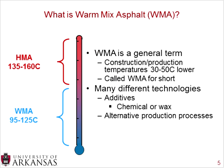What is warm mixed asphalt? It's a general term used when talking about construction or production temperatures approximately 30 to 50 degrees Celsius lower than traditional hot mixed asphalt, often called WMA. There are several different technologies you can use — either an additive, which includes a chemical or a wax, or an alternative production process, which we'll talk about in a couple of slides.